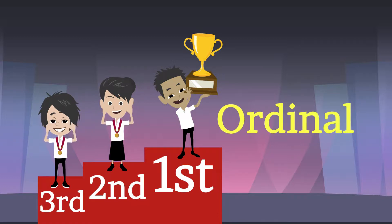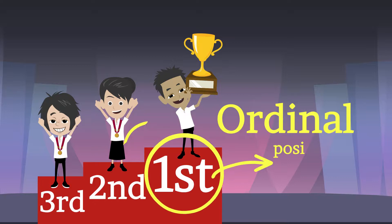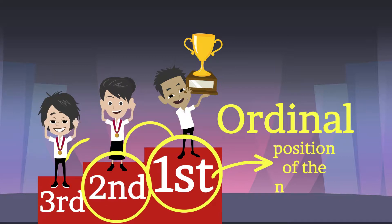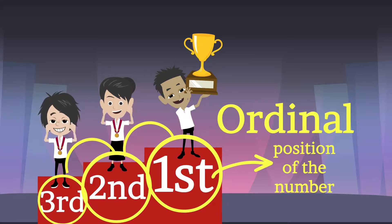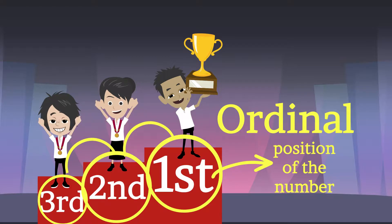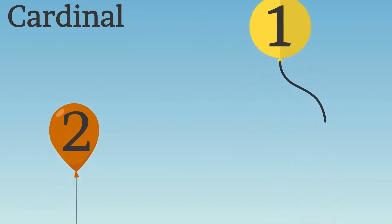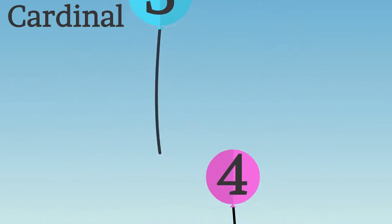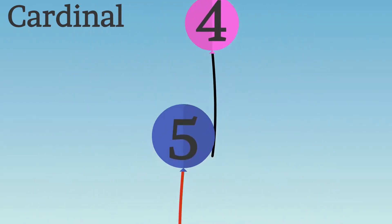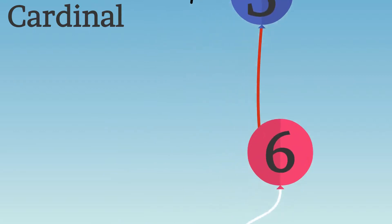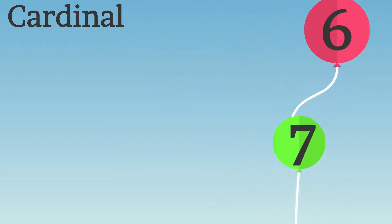Ordinal! Correct! Why? Because it refers to the position of a number. So, in cardinal numbers, the numbers are only written in their simplest and normal form.